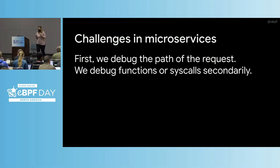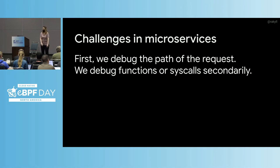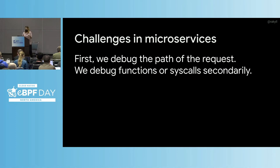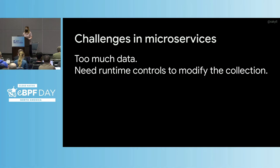When there's an issue, we first debug what is in the critical path of our request. In the monolith times, it was more common to just go in and debug in certain functions or syscalls. Now it's step one: debug the critical path; step two: you can go and dig through and understand what's going on in a specific service. This is where correlations make a lot of difference. We actually have another talk with Morgan McLean at this conference that talks about the challenges and how some of the ways we do correlation are making life easier when it comes to troubleshooting.